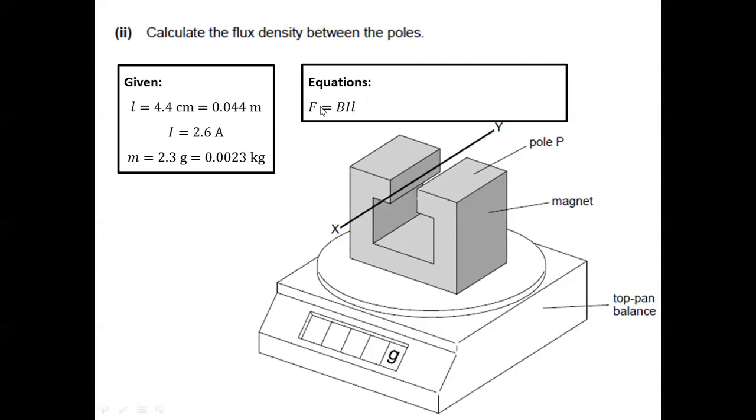But remember, this force is the force that's supposed to act on the wire. But in our scenario, again, the wire is stiff. So the magnet was the one that felt that force.